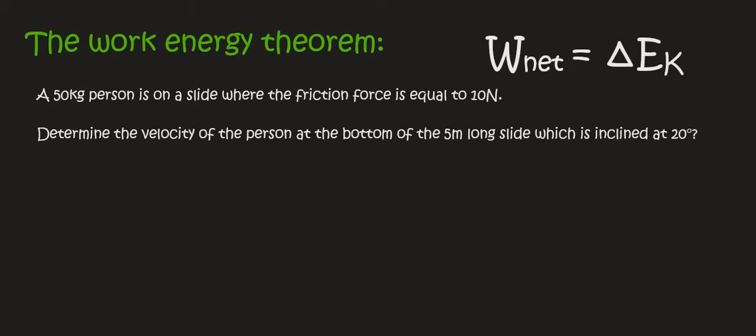Hello everyone, so now we are in a position to really start diving into the work energy theorem. In this question we have a 50 kilogram person is on a slide where the friction force is equal to 10 newtons. Determine the velocity of the person at the bottom of the 5 meter long slide which is inclined at 20 degrees.